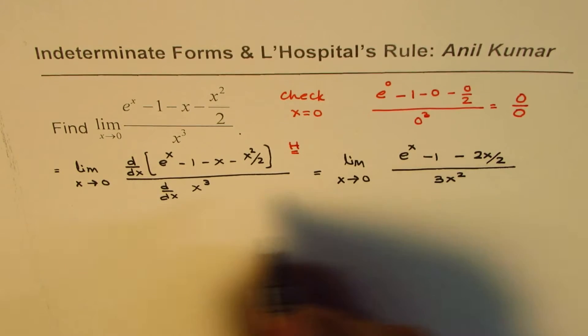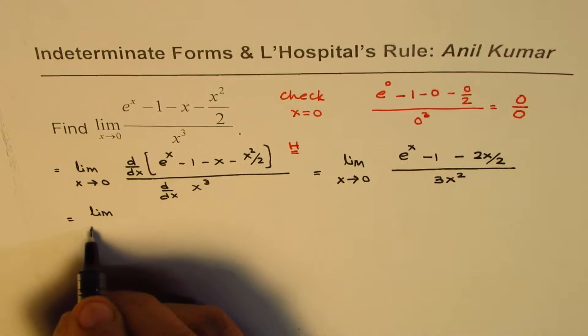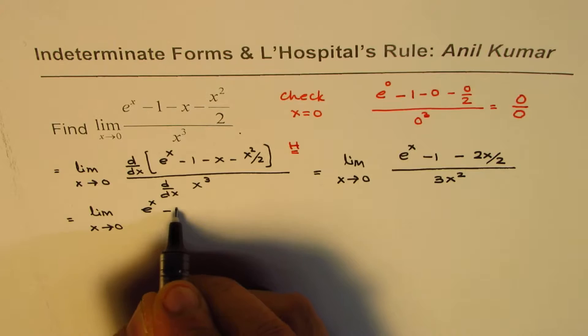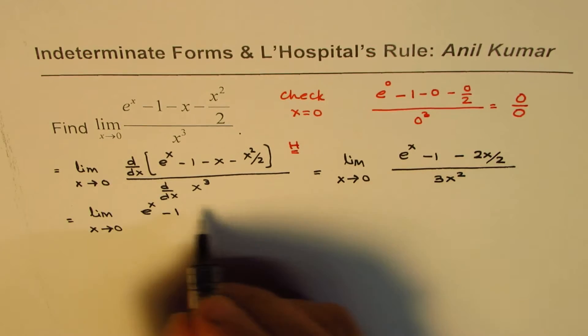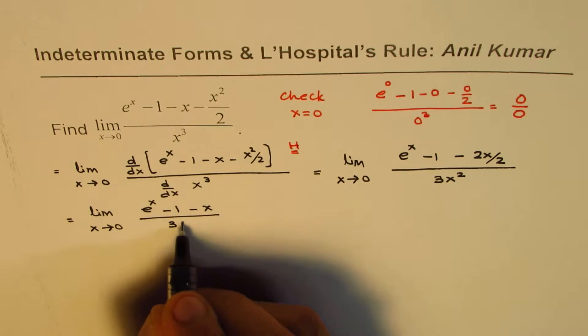Now, we could simplify this and rewrite this as limit x approaches 0, e to the power of x minus 1 minus x over 3x square.